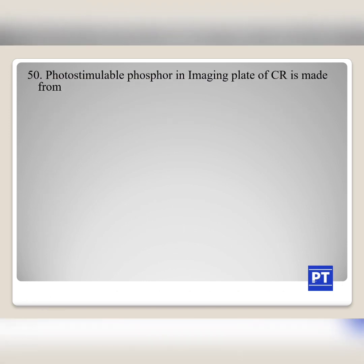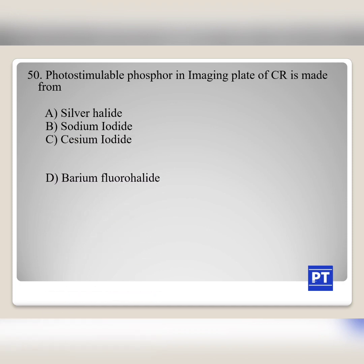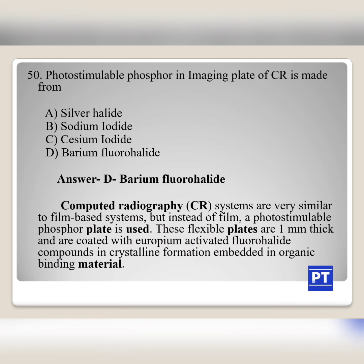Question No. 50: The photostimulable phosphor imaging plate of CR — CR means computed radiography — is made from: Option A silver halide, Option B sodium iodide, Option C cesium iodide, Option D barium fluorohalate. The answer is Option D, barium fluorohalate. Computed radiography systems are very similar to film-based systems, but instead of film a photostimulable phosphor plate is used. These flexible plates are 1 mm thick and are coated with europium-activated fluorohalate components in crystalline formation embedded in organic binding material. The film-based system has been replaced by imaging plates.